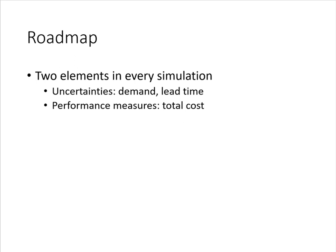Now let's talk about how we are going to approach this problem. There are two elements that exist in every simulation. First, there are uncertainties — in this example, demand and lead time. The second element is some kind of performance measure or performance metric. The purpose of conducting simulation is to estimate or evaluate performance metrics. In this example, that is the total cost.